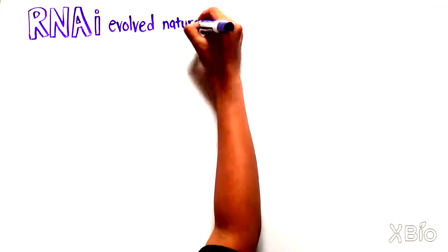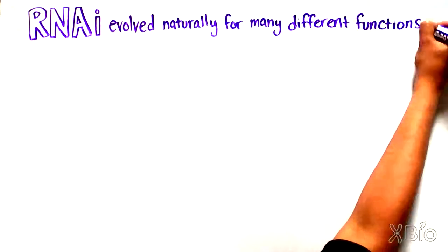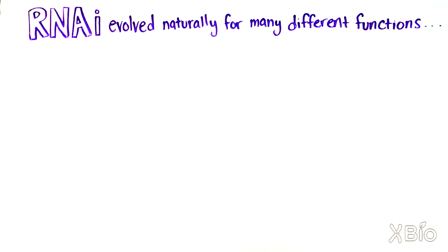In the years that followed Dr. Fire and Dr. Mello's initial findings, scientists began to understand that RNAi is a process that naturally evolved in many organisms for a variety of functions.